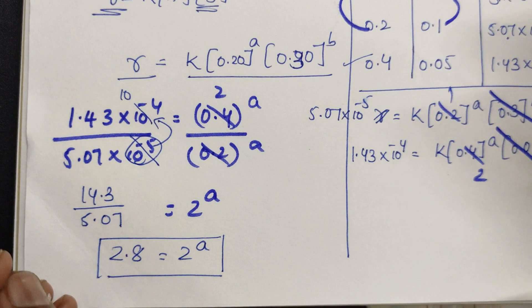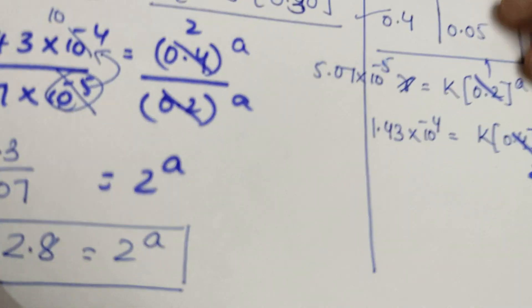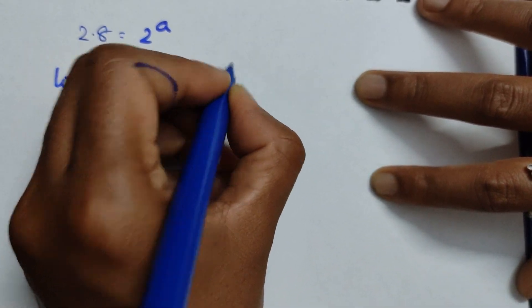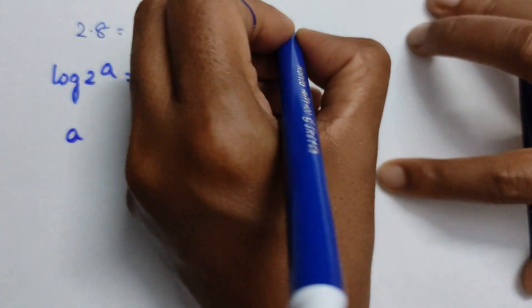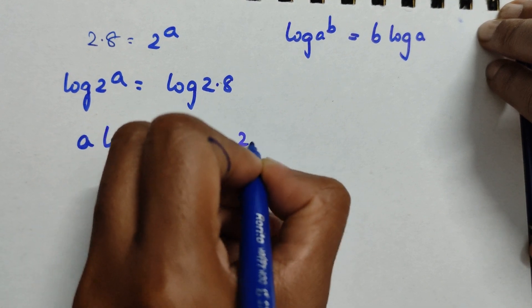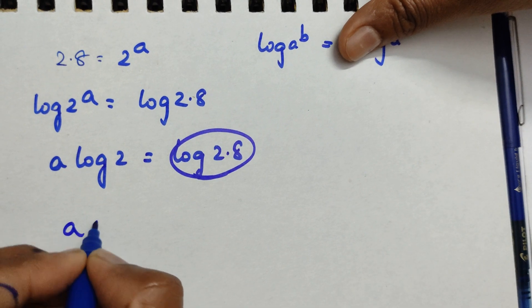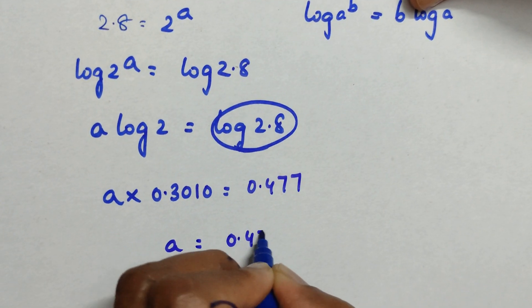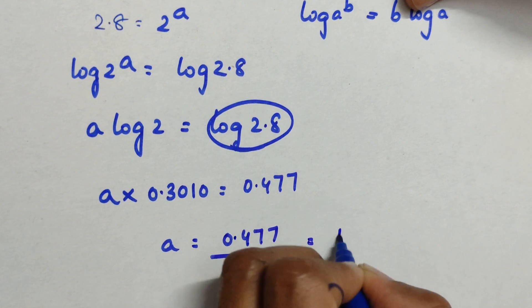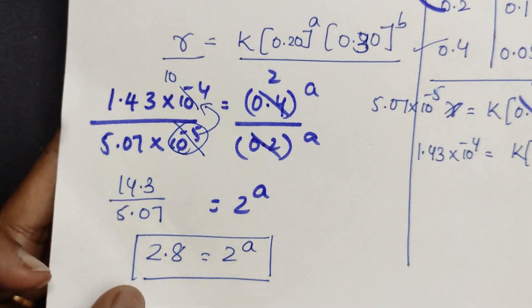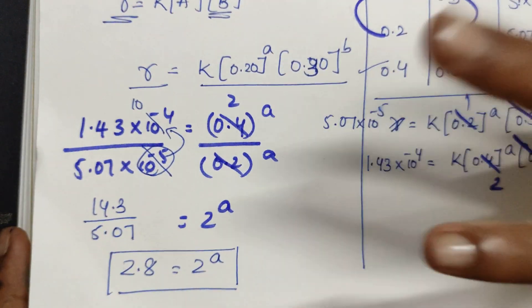Students feel difficulty solving 2.8 equals 2 to the power of A to find the order. The normal method: apply log on both sides — log(2 to the power of A) equals log(2.8), which gives A·log 2 equals log 2.8. Rounding off: log 3 is 0.477 and log 2 is 0.3010. Taking the ratio you get a value around 1.5. This is the general method, but it is time consuming.